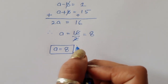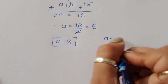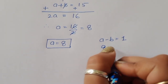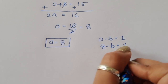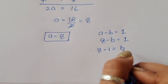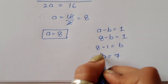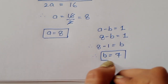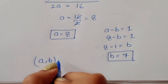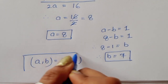Now we have to find the value of B. From case 1, A minus B is equal to 1, and the value of A is 8. So 8 minus B is equal to 1. Therefore, B is equal to 8 minus 1, which is 7. So from case 1, the values of A and B are 8 and 7.